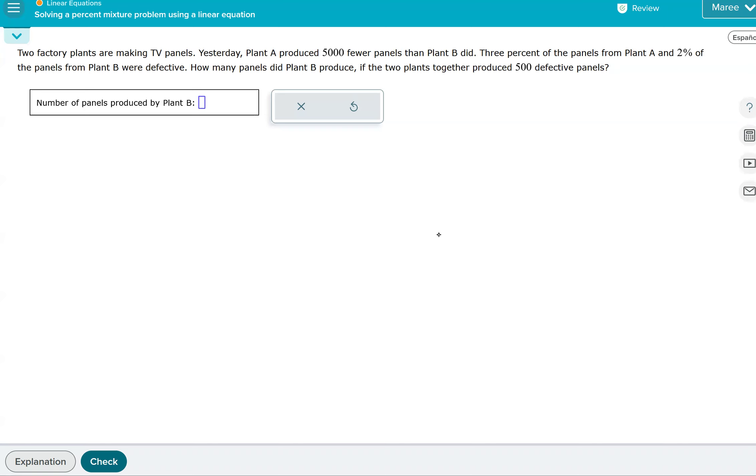So we set up this table, and please subscribe to my channel and like any videos that you find helpful. I'm going to put an A for plant A, a B for plant B, and T for total. Plant A had 5,000 fewer panels than plant B did, and we're looking for how many panels plant B produced. So we're going to put an X for B and then we're going to take away 5,000 for A.